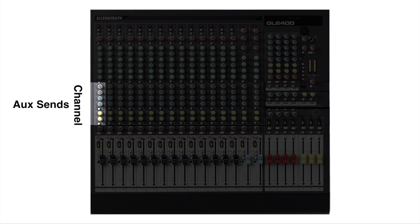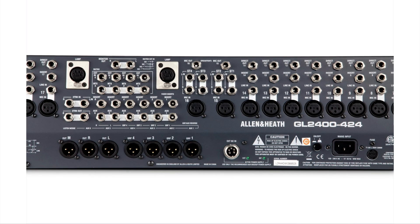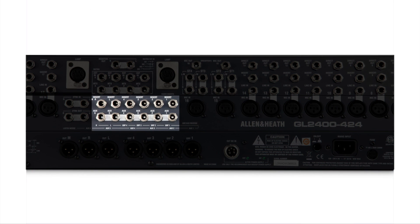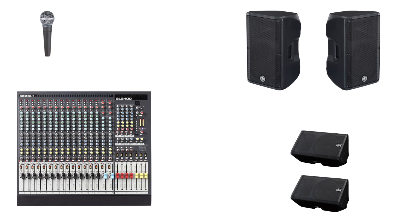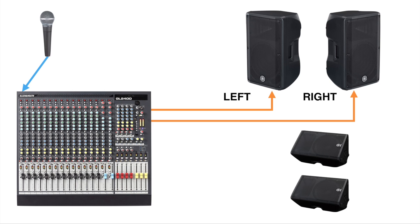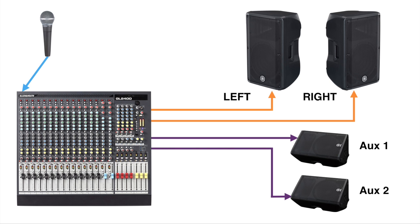By adjusting this send, we are sending the signal that has already come into our channel input to a master section. This master section also has controls very similar to the master faders. If we look at the back of the mixer, there are six auxiliary outputs and inserts, which we'll be using to connect to our powered monitors. Our microphone goes into channel one, and the outputs of the main are sent to the left and right main speakers. Auxiliary one is sent to auxiliary one output, connected to a powered floor monitor, and the same is done with auxiliary two.